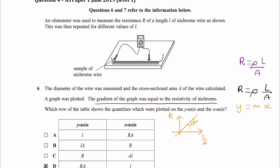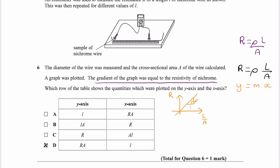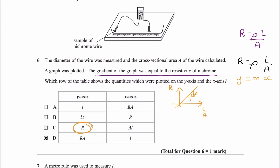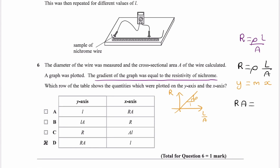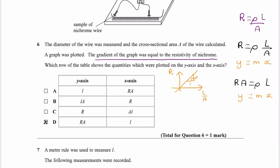But if we look at the options available, when we have R on the y-axis, the x-axis ends up having A times L. But we want L over A, so it can't be option C. The other option is if we have RA as our y — bringing the A to the left-hand side — that equals resistivity times length. So y is RA, m is rho, and x is L. That gives us option D, so our answer is D.